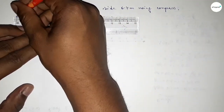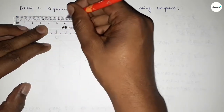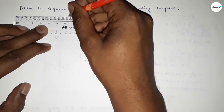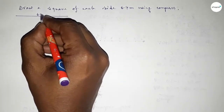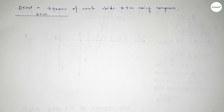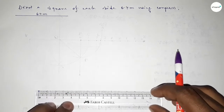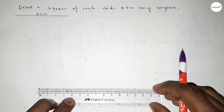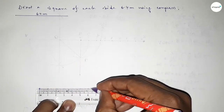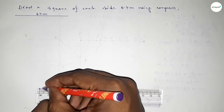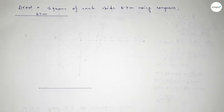First of all, we have to draw a line of length 6.4 centimeters. This is the 6.4 centimeter line. Now we have to draw another line of length 6.4 centimeters. This is also 6.4 centimeters. Taking here point B and here C.